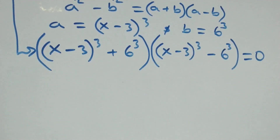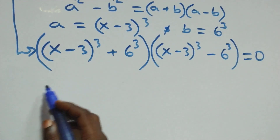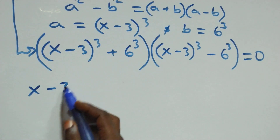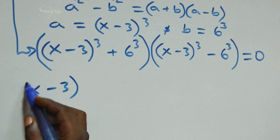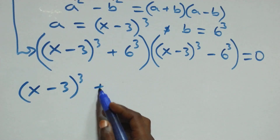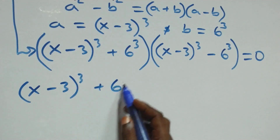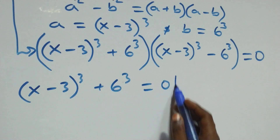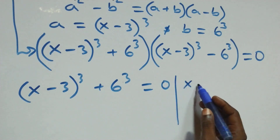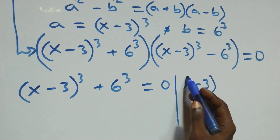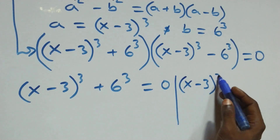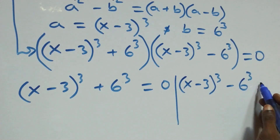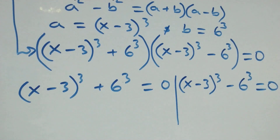Which implies we have two possible cases. We have (x minus 3) raised to the power 3 plus 6 raised to the power 3 equals to 0.